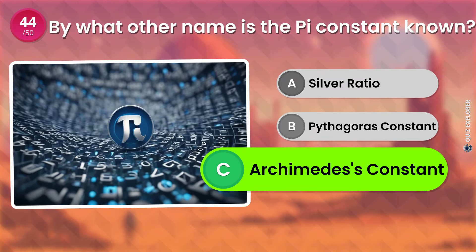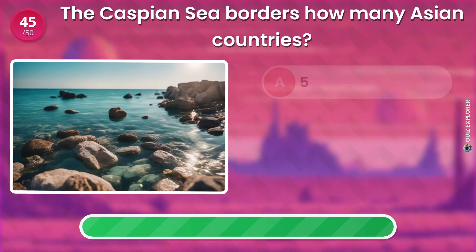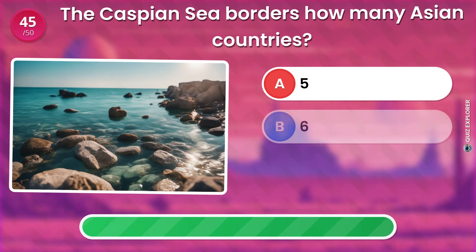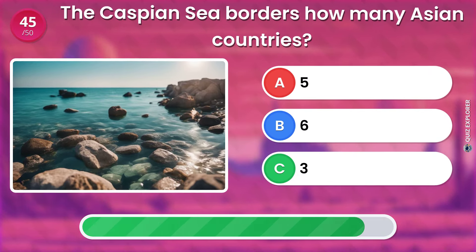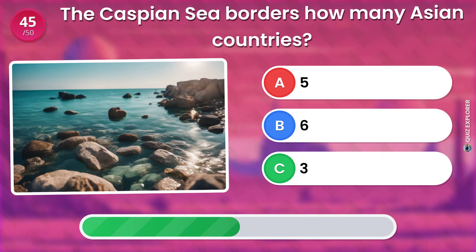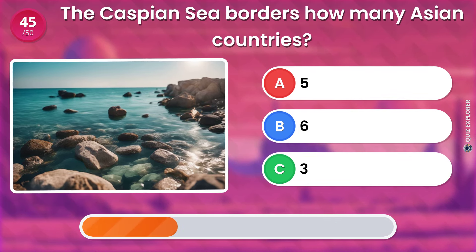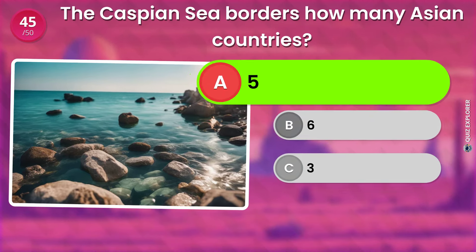The Caspian Sea borders how many Asian countries? Five. Six. Three. The answer is: Five.